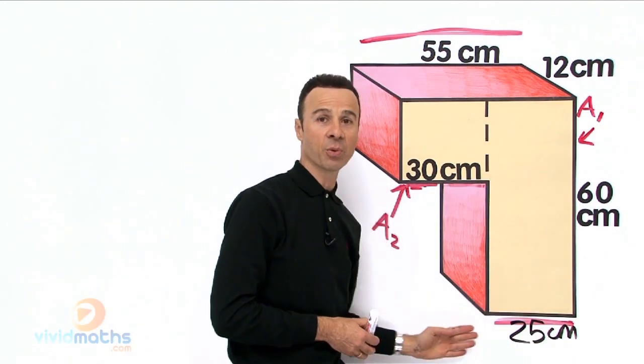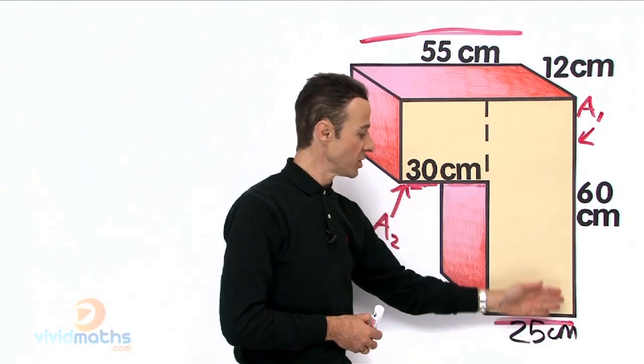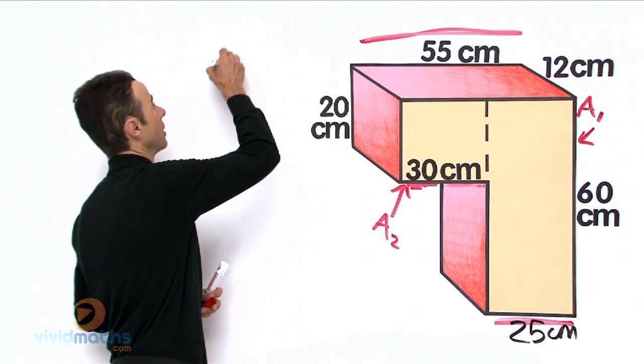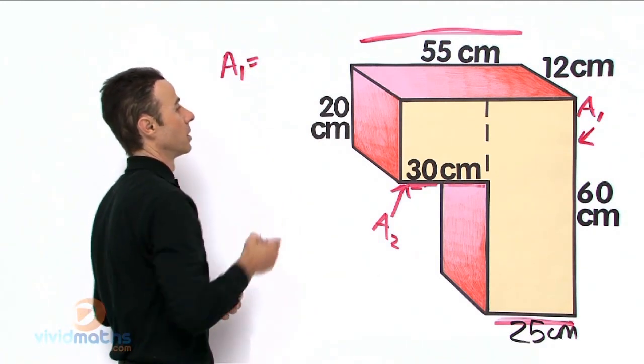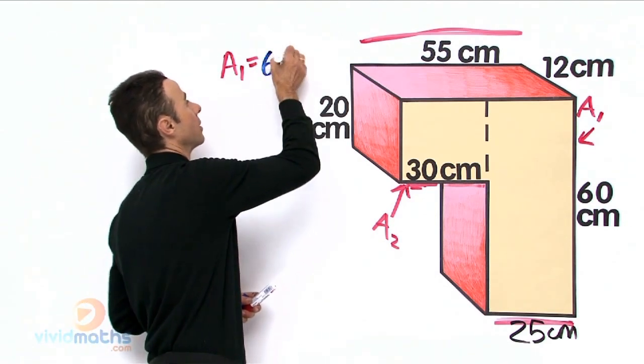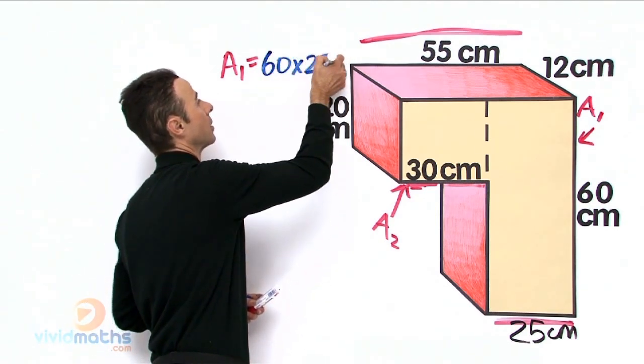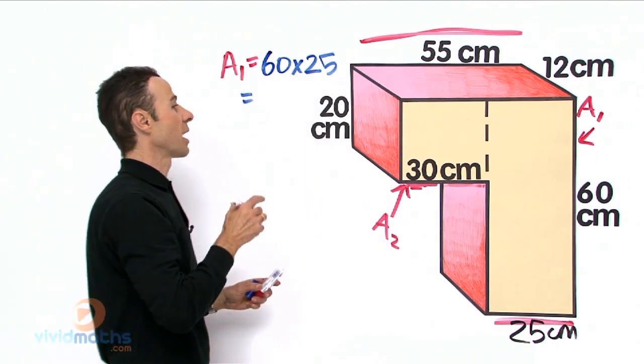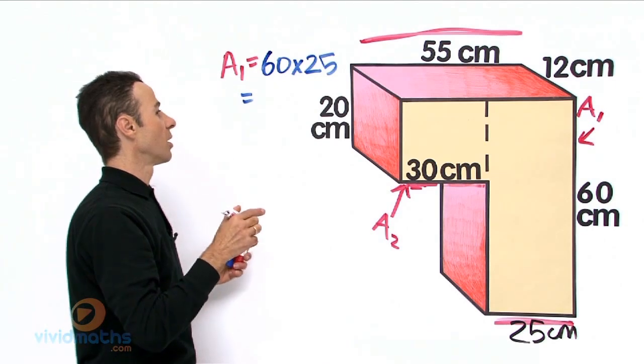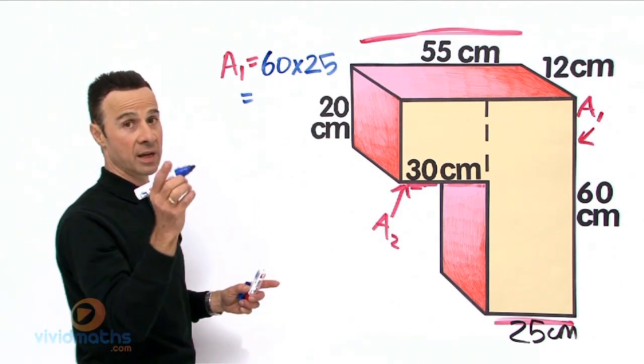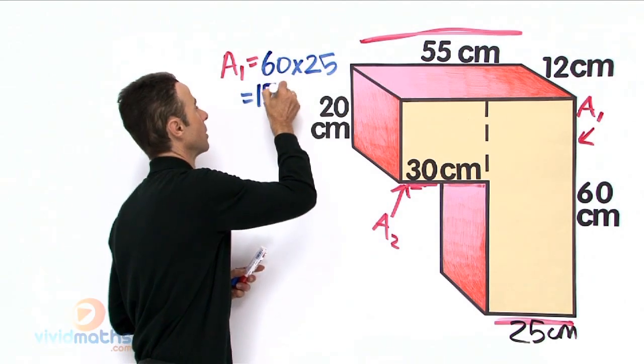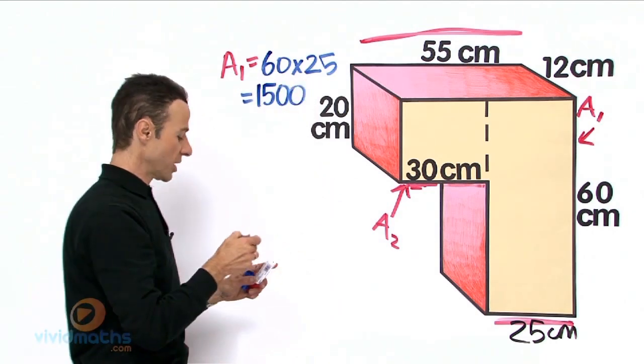Now that we know that, all we need to do to find this area is what? Length times breadth. We have the missing length so 60 times 25. So let us do that. So for area one, 60 times 25, which equals on the calculator 60 times 25 is a grand total of 1500.